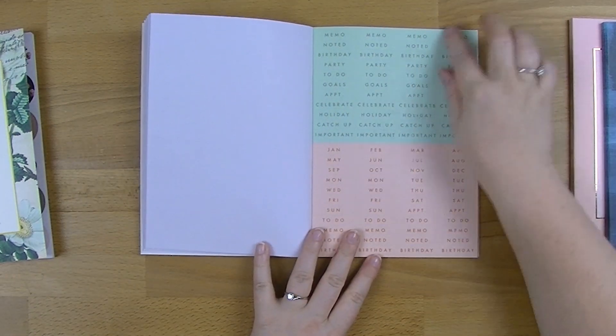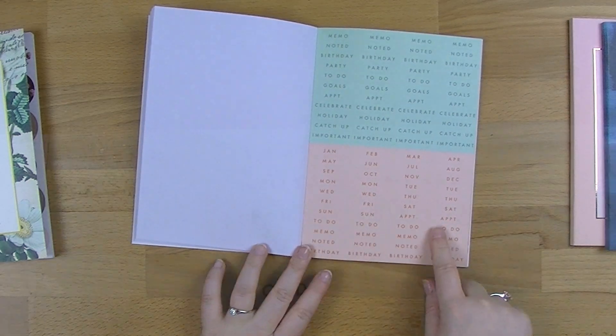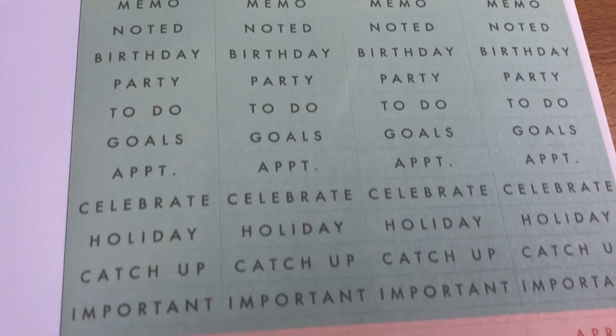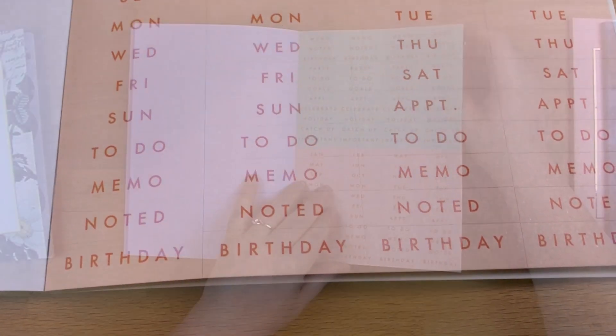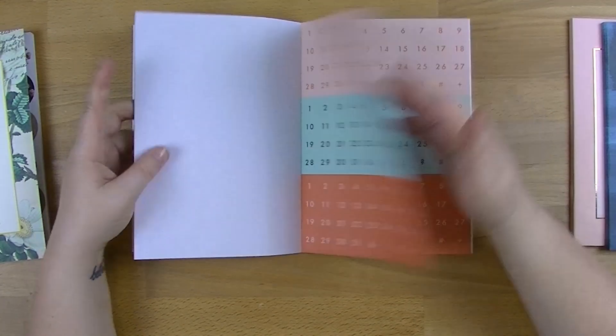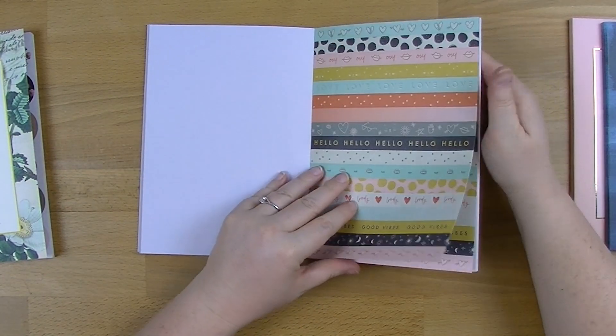Then we've got your sort of planner ones. And I'm really glad they've got your January, February, March and your days of the week. Kind of annoyed if I'm being honest that there's not these in the green and the pink, but that's not the worst thing. And then you've got some numbers and then some borders. These ones have got some embossing to them as well.